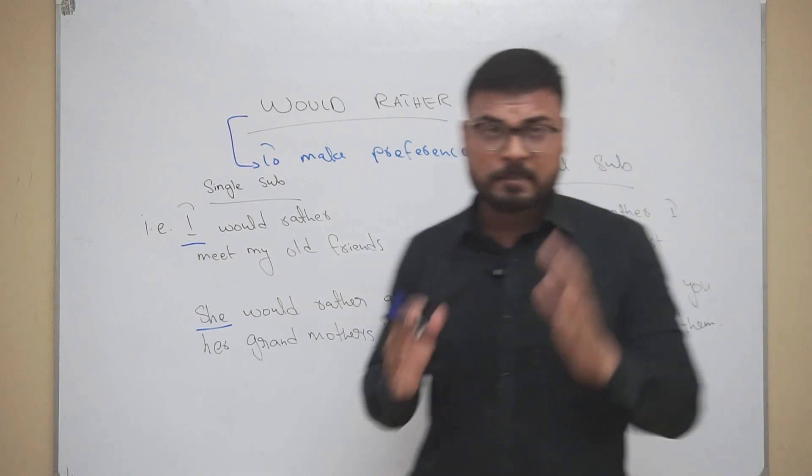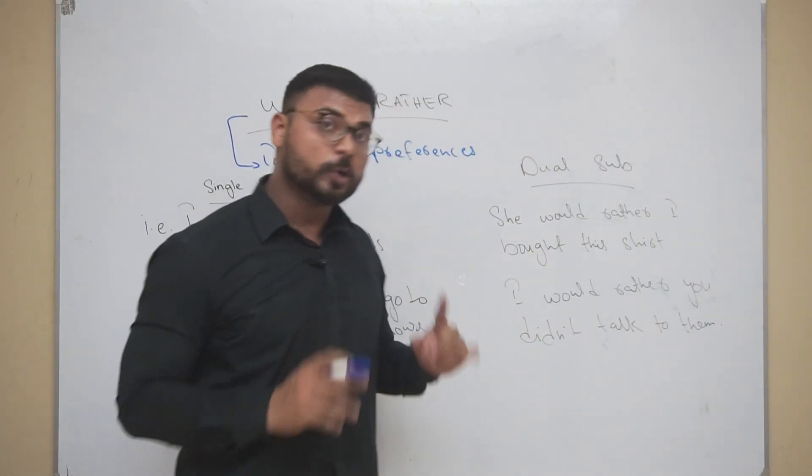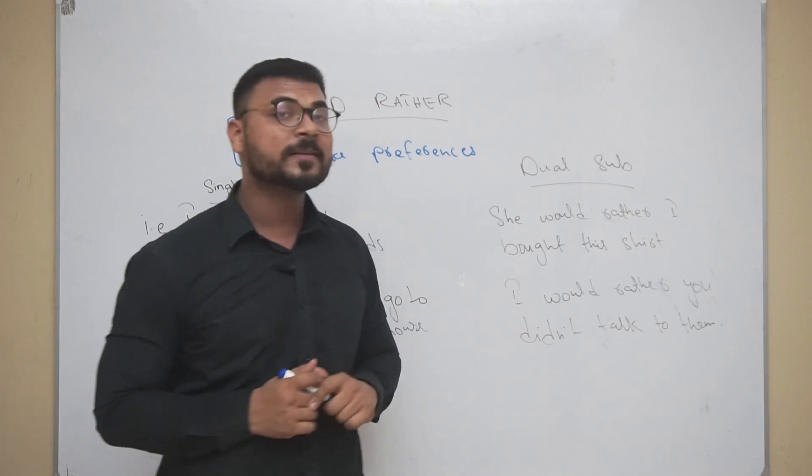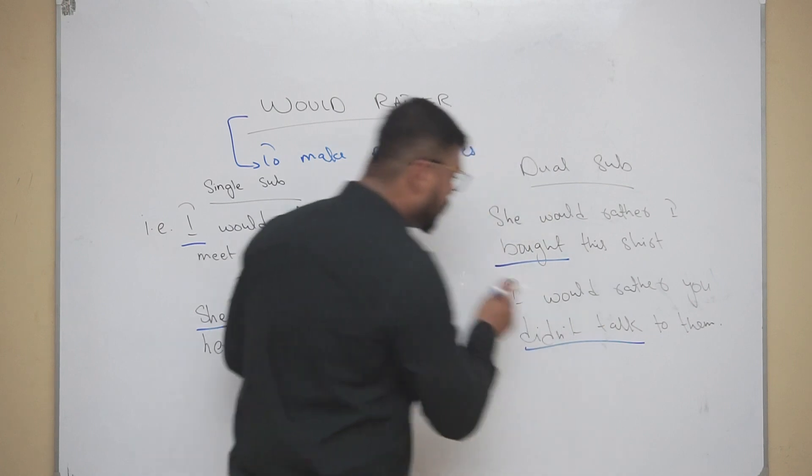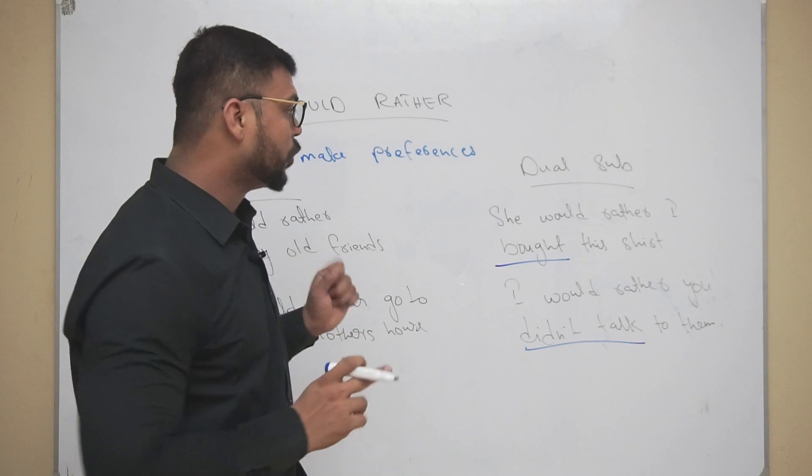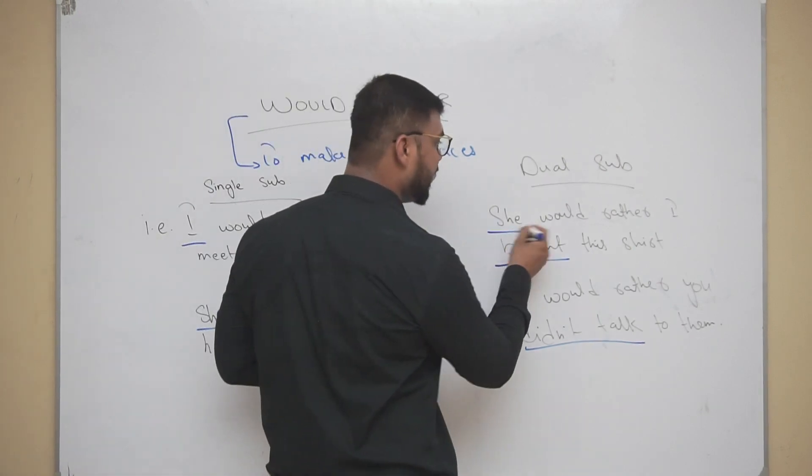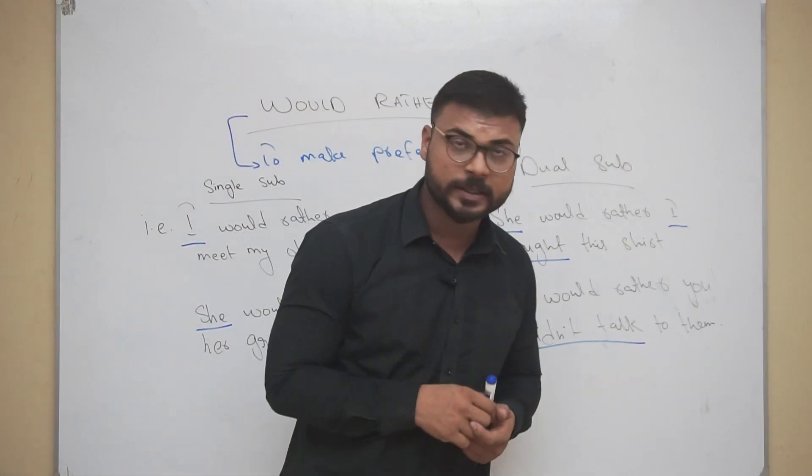When you make preference, or I make preference, or somebody else makes preference for me or somebody else, remember there we use would rather for dual subject. And the rule is that we follow past simple tense here.